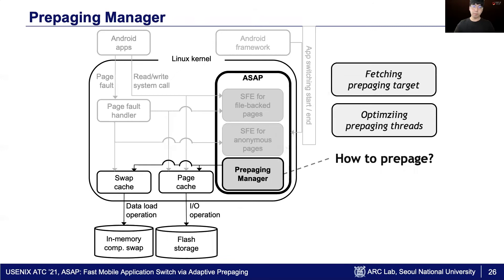Moving on, the pre-paging manager takes charge of how to pre-page. Its goal is to achieve high resource utilization and low thread contention. For high resource utilization, at the beginning of a switch, the pre-paging manager spawns multiple pre-paging threads. Then it lets them aggressively fetch pages in the pre-paging target table of the switching application.